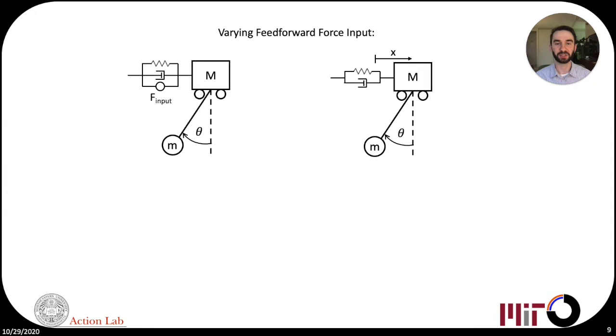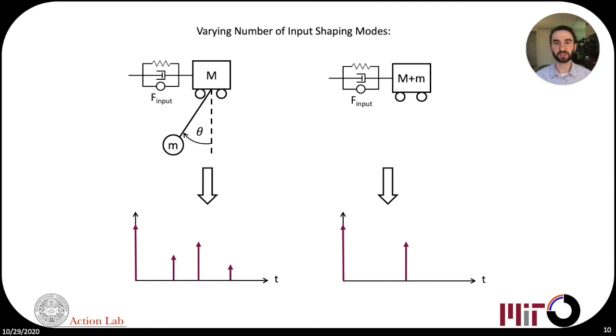Physical models contained stiffness and damping elements to reproduce the impedance of the hand interacting with the cup. Models were simulated with and without a feed-forward force input term. The model with hand impedance has two modes, so input shaping requires four impulses to completely cancel out residual oscillations. We also simulated a version of input shaping that generated impulses based only on the hand's impedance without the pendulum dynamics, mimicking a scenario in which subjects planned their motion without knowledge of the object's flexibility.